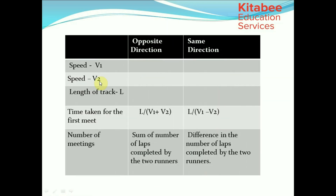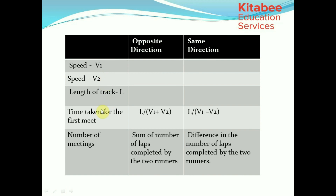In summary: if the speeds are V1 and V2 and track length is L, then if they run in opposite directions the time for the first meeting is L divided by (V1 + V2). To find the number of meetings, add the number of laps completed by both runners if running in opposite directions, or take the difference in laps if running in the same direction.